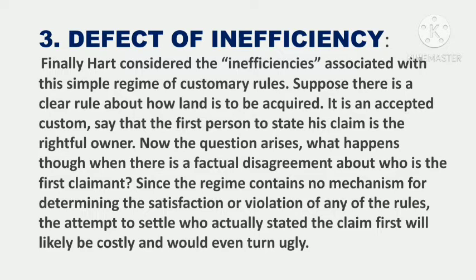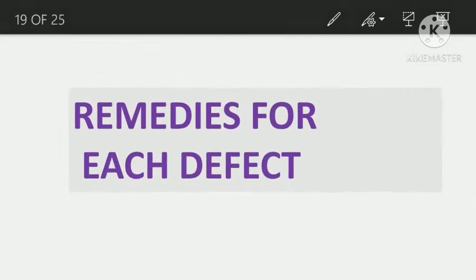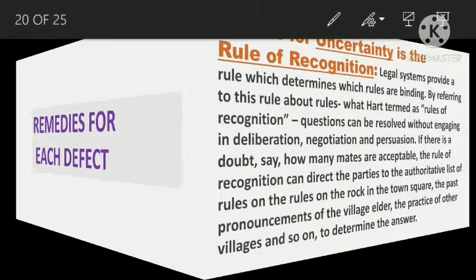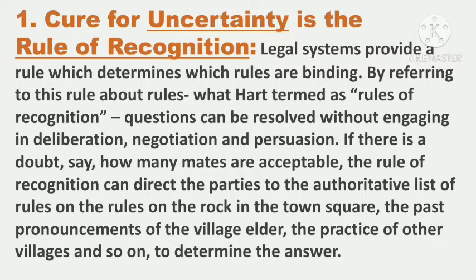So we have covered the three defects: defect of uncertainty, defect of static character, and defect of inefficiency. To cure all three defects, Hart also gives three remedies. To cure the defect of uncertainty, there is the rule of recognition. To cure the defect of static character, there is the rule of change. To cure the defect of inefficiency, there is the rule of adjudication. And these remedies are themselves secondary rules, which transform a pre-legal society into a proper legal society.